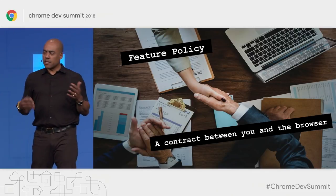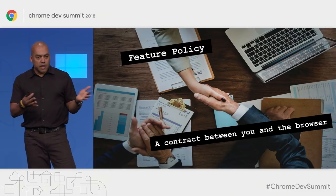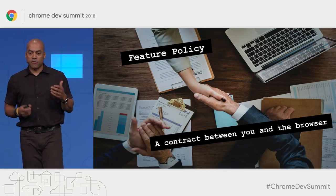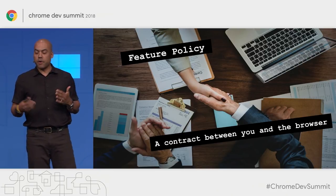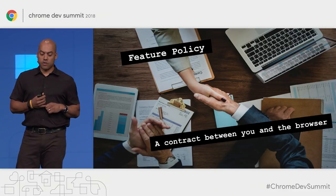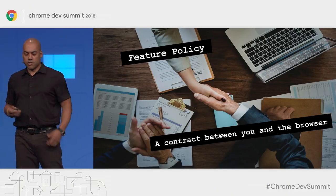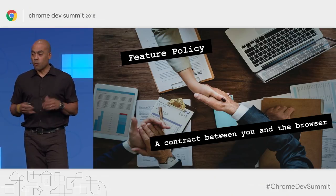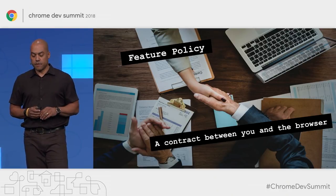Learning from AMP, we thought about a more configurable approach, and that's feature policy. We're really excited about it — we think it's going to be a great tool to help guide you towards the well-lit path of web development. With feature policy, you opt into a set of policies for the browser to enforce throughout your site. These policies restrict which features the site can access, or modify the browser's default behavior for certain features.